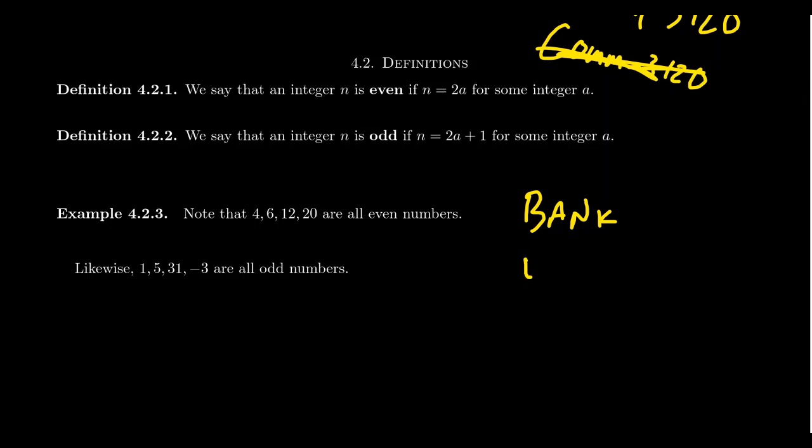Consider the word W-I-N-D. Some of you might have said this is 'wind,' the thing that blows through the sky. But some of you might have also said it was 'wind' as a verb. Is it a noun or is it a verb? You have to know what its meaning is just to even know how to say it.